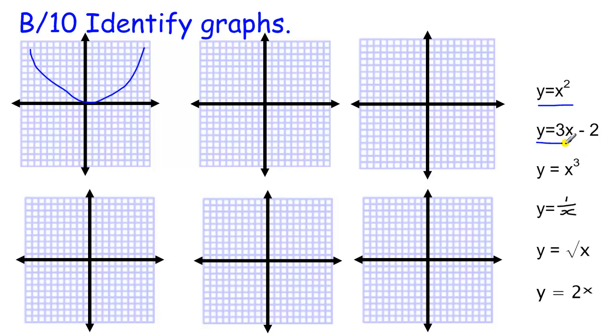The next one is y equals 3x minus 2. This is what we call a linear graph. So that was a quadratic or a squared. This is a linear or straight line. We know that because the highest power of x is just, there's no power of x, it's just x to the power of 1, so it's 3 lots of x, 3 lots of x minus 2.